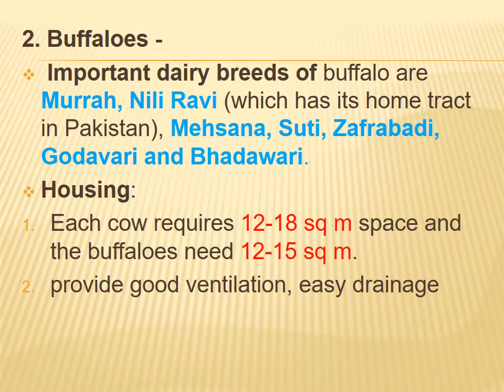Second, buffalos. Important dairy breeds of buffalo are Murra, Nili Ravi (which has its home tract in Pakistan), Mahesana, Surti, Jaffarabadi, Godavari, and Badawari. For housing, each cow requires 12 to 18 square meters of space and buffalos need 12 to 15 square meters. Provide good ventilation and easy access.